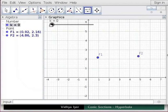Using this slider, K can be changed from 0 to 10. K will be the difference of the distances of any point on the hyperbola from the foci F1 and F2. Drag slider K to 4.